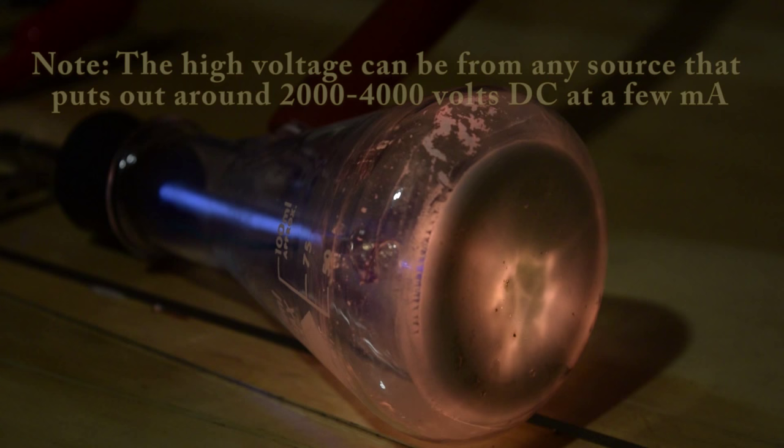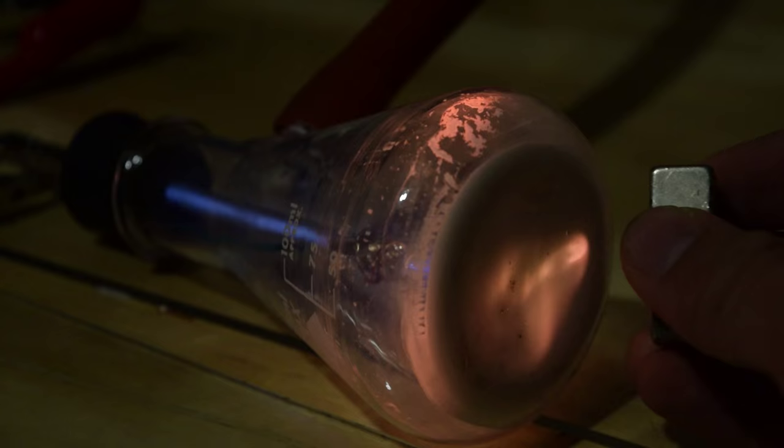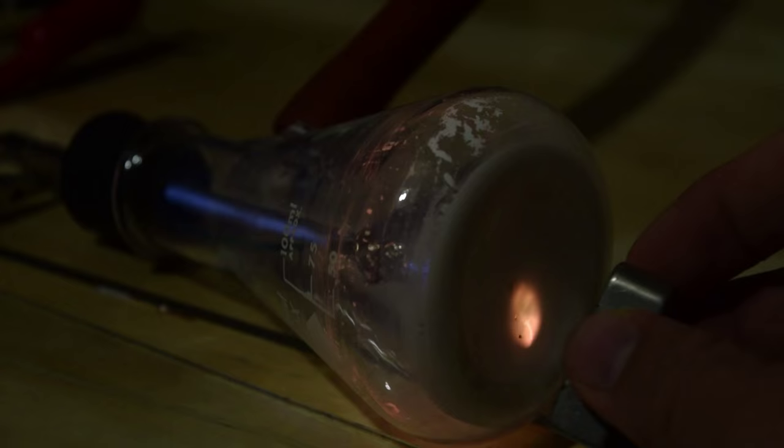Once the vacuum is pulled and a high voltage is applied, the whole tube is filled with a beautiful glow. The phosphor screen can display deflection with a strong neodymium magnet. You can see how it concentrates the electron beam.